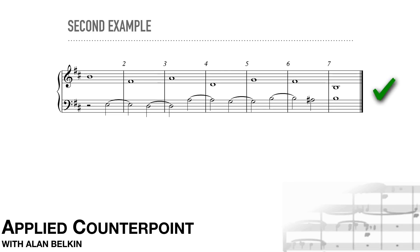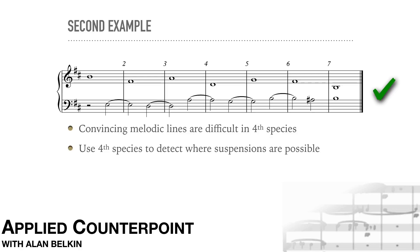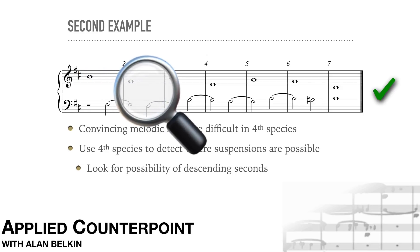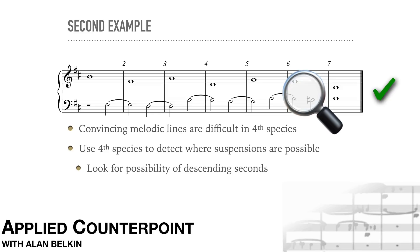Now an example with the added part underneath. Because all of our suspensions resolve down, it can be difficult to arrive at a convincing melodic line in fourth species. For that reason, fourth species is the most artificial of all. The best way to think of it is as practice in finding opportunities for suspensions. Suspensions add harmonic richness, and composers seek them out. Since the suspension is essentially a delayed descending second, what we're looking for is two notes in the cantus that can be harmonized with a descending second in the added part.